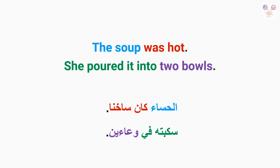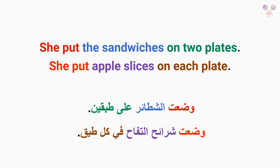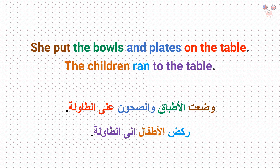The soup was hot. She poured it into two bowls. She put the sandwiches on two plates. She put apple slices on each plate. She put the bowls and plates on the table. The children ran to the table.